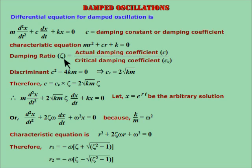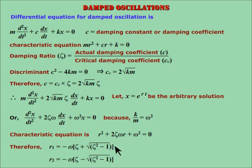The critical damping coefficient will be clear later in this video. For the time being, it is the damping coefficient when the discriminant of the quadratic equation is taken as zero. Therefore, the damping coefficient is as shown. Therefore, the differential equation for damped oscillation is as shown. Let the arbitrary solution be x equal to e to the power rt. The characteristic equation is as shown, and r has these two values.